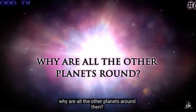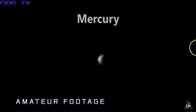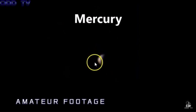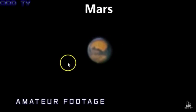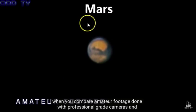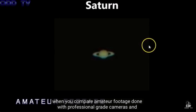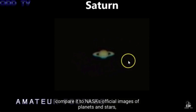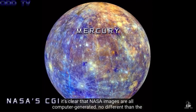Why are all the other planets round then? When you compare amateur footage done with professional grade cameras and compare it to NASA's official images of planets and stars, it's clear that NASA images are all computer-generated, no different than the photos of Earth.